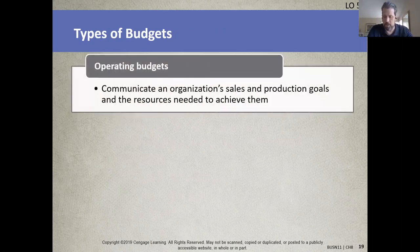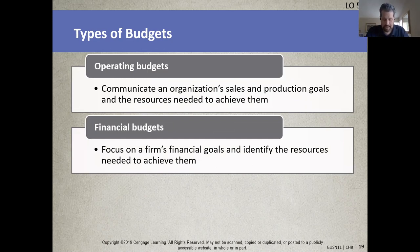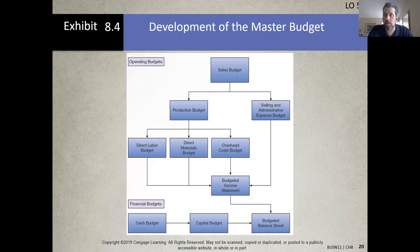The first step in preparing an operating budget is to develop a sales budget. Next, the production budget is developed and used to prepare budgets for direct labor costs, direct material costs, and manufacturing overhead. The last step is the creation of the budgeted income statement. The cash budget identifies short-term fluctuations in cash flows. The capital expenditure budget identifies the firm's planned investments in fixed assets. The budgeted balance sheet is prepared by combining information from these budgets and the budgeted income statement. The master budget shows how all the pieces fit together to form a complete picture for the organization.